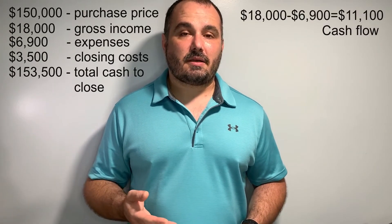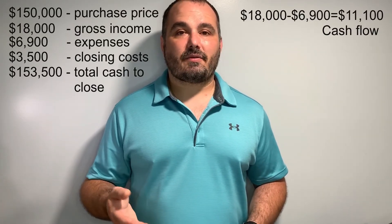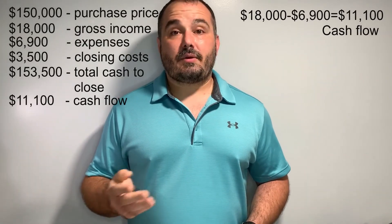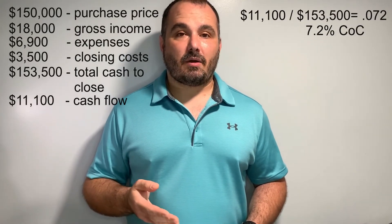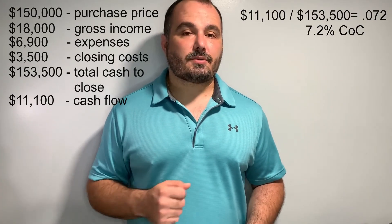Let's take two examples using the same house — one with a loan and one paying cash. We use the same house: $150,000 purchase price, $18,000 gross income, and $6,900 annual expenses. To purchase this house cash, assuming $3,500 in closing costs, you would need $153,500 to close. With $18,000 minus $6,900, that's $11,100 in annual cash flow. Taking $11,100 divided by $153,500 gives us 0.072, or a 7.2% cash-on-cash return.